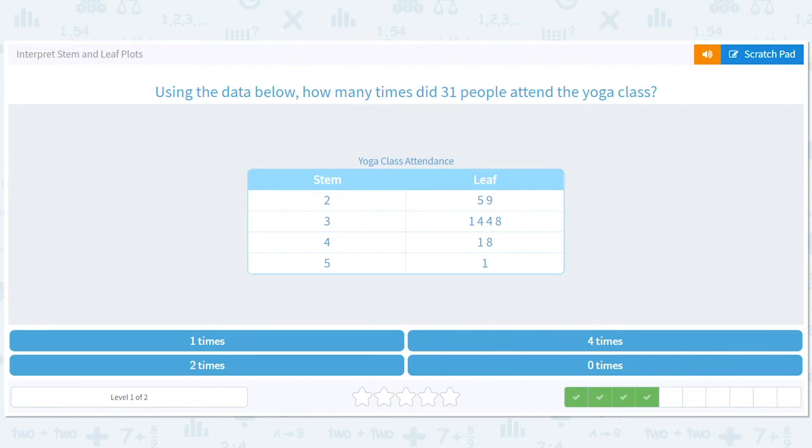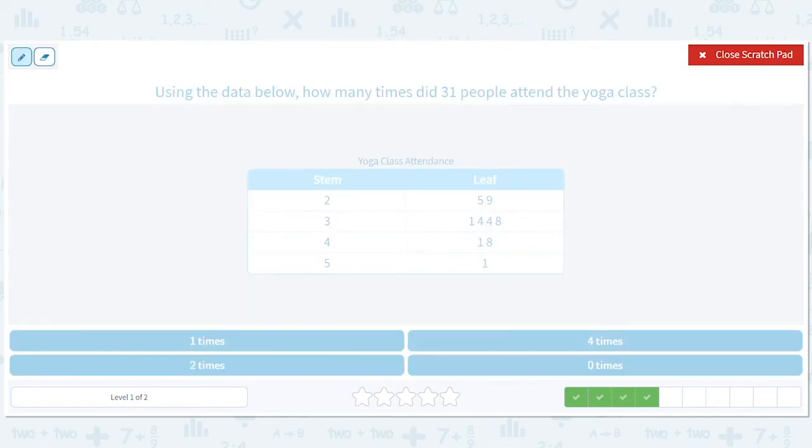Using the data below, how many times did 31 people attend the yoga class? Okay, that's a great question. Instead of asking about a number, it's asking about times. So there were several days, and on one day 25 people showed up to yoga, on another day 29 people showed up, on another day 31 people showed up, on another day 34 people showed up, and we can stop. We don't have to go through the end. There's a bunch we didn't write down.